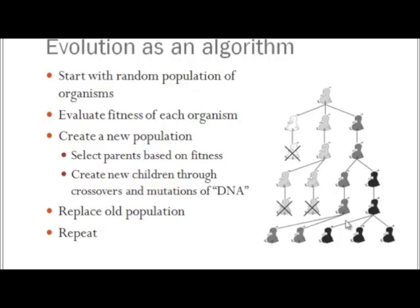So the new population selects these parents based on fitness, though with a notable amount of stochasticity in the process, and these new children are created through combinations of DNA, through crossovers and mutations of that DNA. These children then replace the old population, and the process repeats indefinitely, creating better and better organisms.